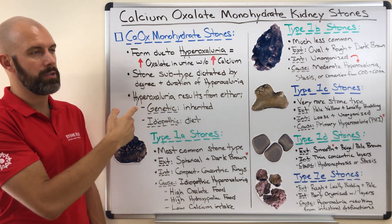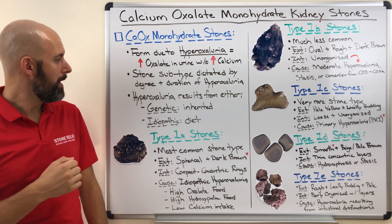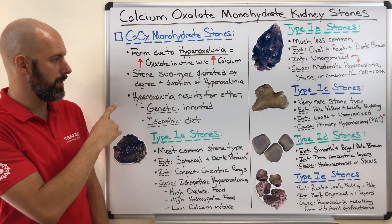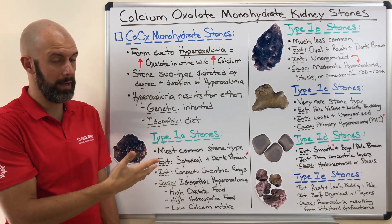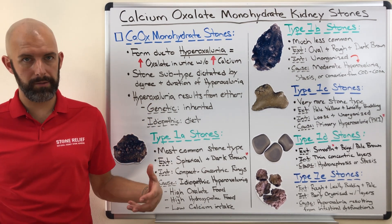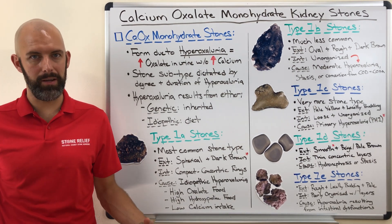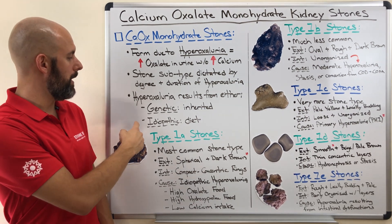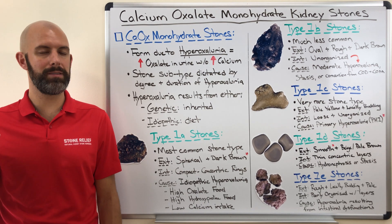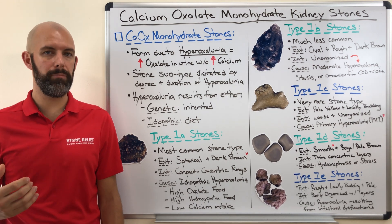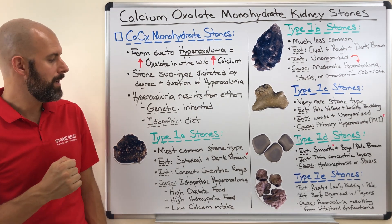The duration is how long hyperoxaluria is happening within your body. Hyperoxaluria is curious because this condition can either be genetic — something inherited, where you just carry higher levels of oxalate in your urine — or there is also idiopathic hyperoxaluria, which means it is influenced very heavily by the things that you eat, as we will see in some of these different stone types.